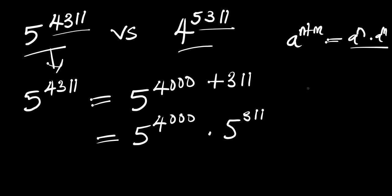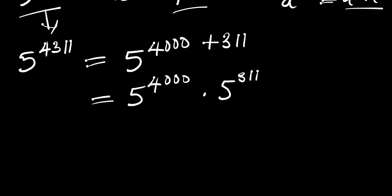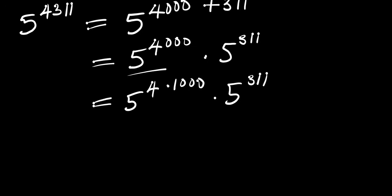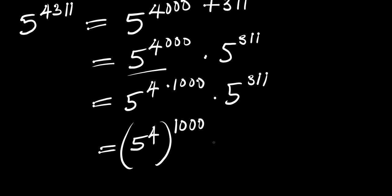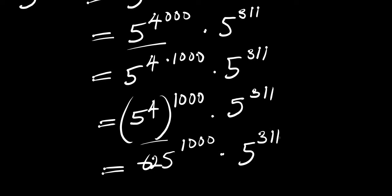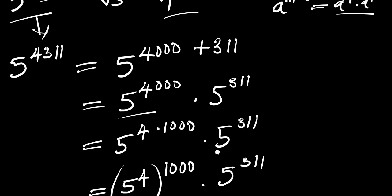We can also rewrite 5^4000 as 5^(4 × 1000), which gives us (5^4)^1000 times 5^311. Since 5^4 is simply 625, we have 625^1000 times 5^311. We can stop here for the first number.